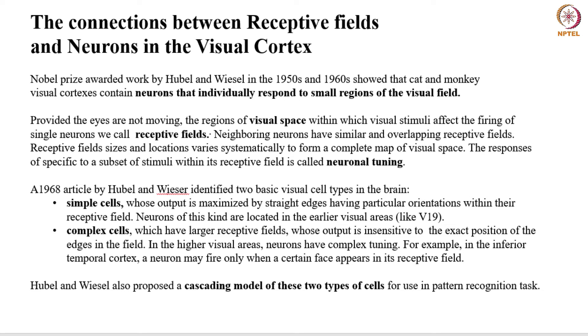But if we look at the sum of all these neurons and the receptive fields that they cover, they together form a very systematic and complete picture of the image at hand. And the way the neurons respond to the stimuli from their respective fields is called neuronal tuning.